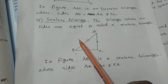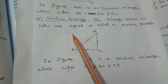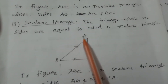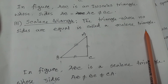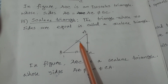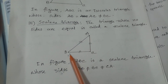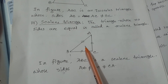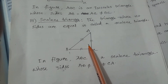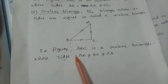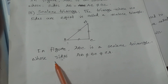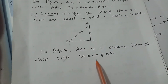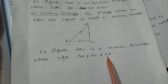Based on sides, the last one is Scalene Triangle. The triangle whose no sides are equal is called a scalene triangle. Here AB, BC, and CA — these three sides are not equal. So this figure is a scalene triangle. In figure, ABC is a scalene triangle, whose sides AB is not equal to BC, not equal to CA.